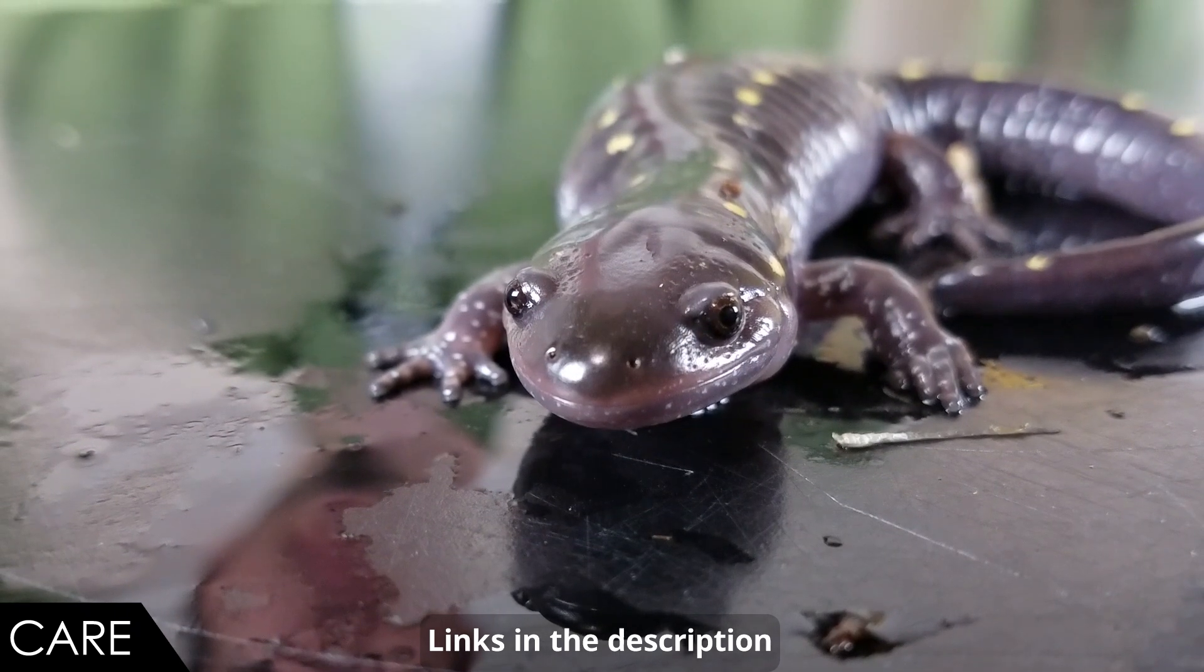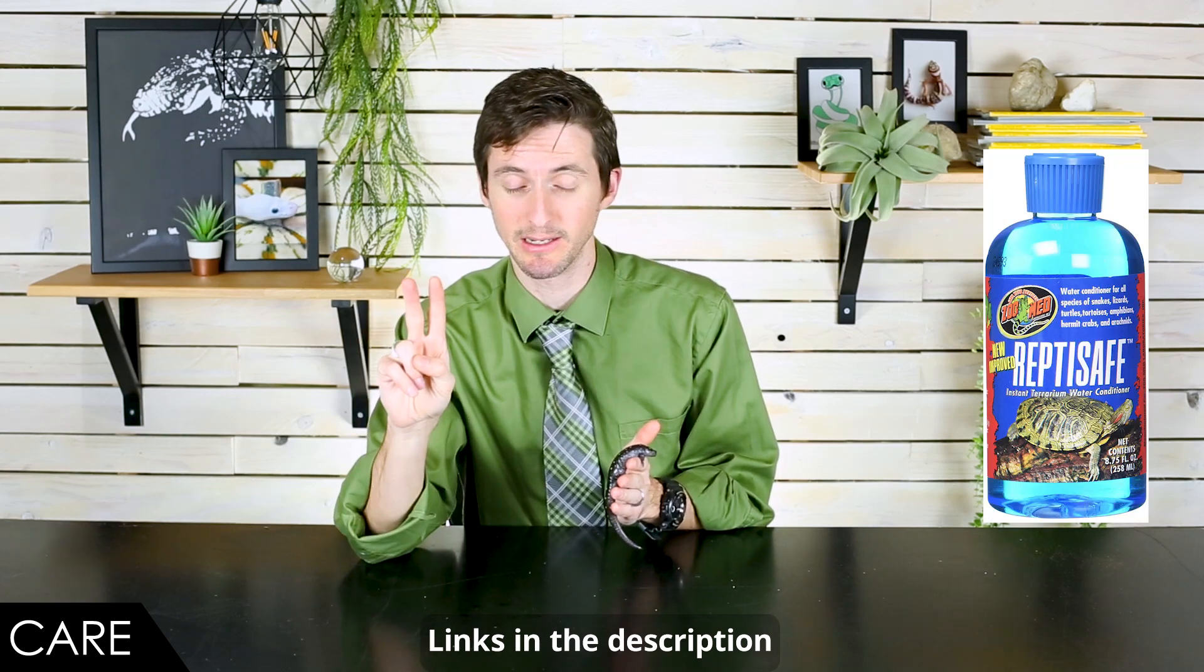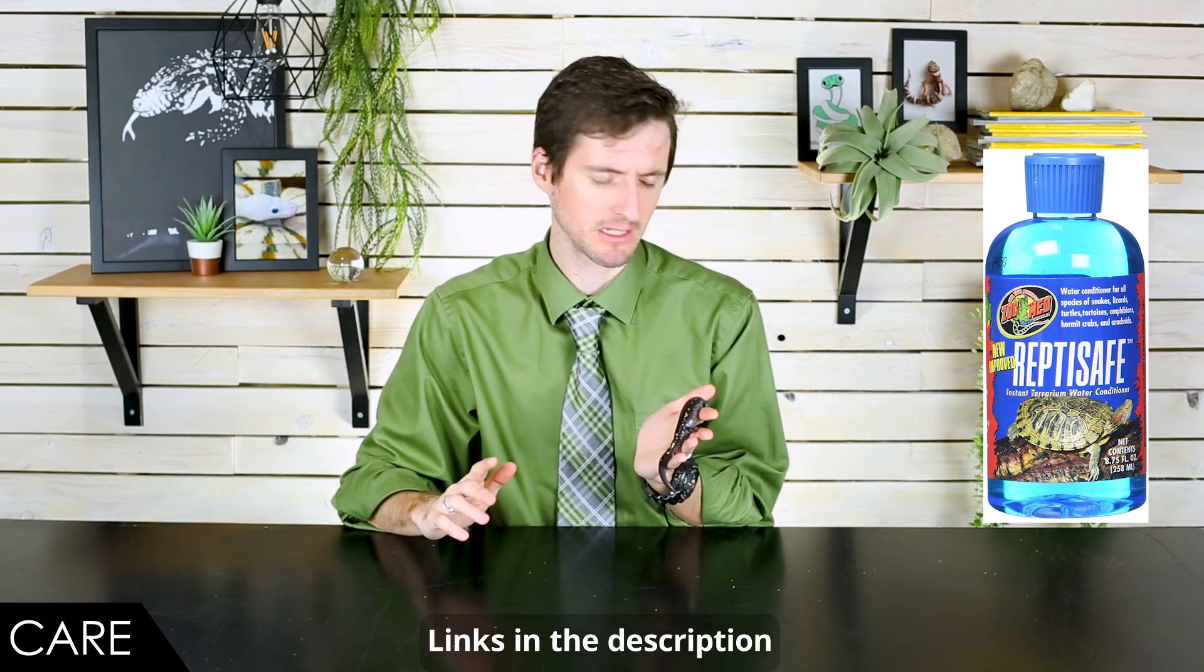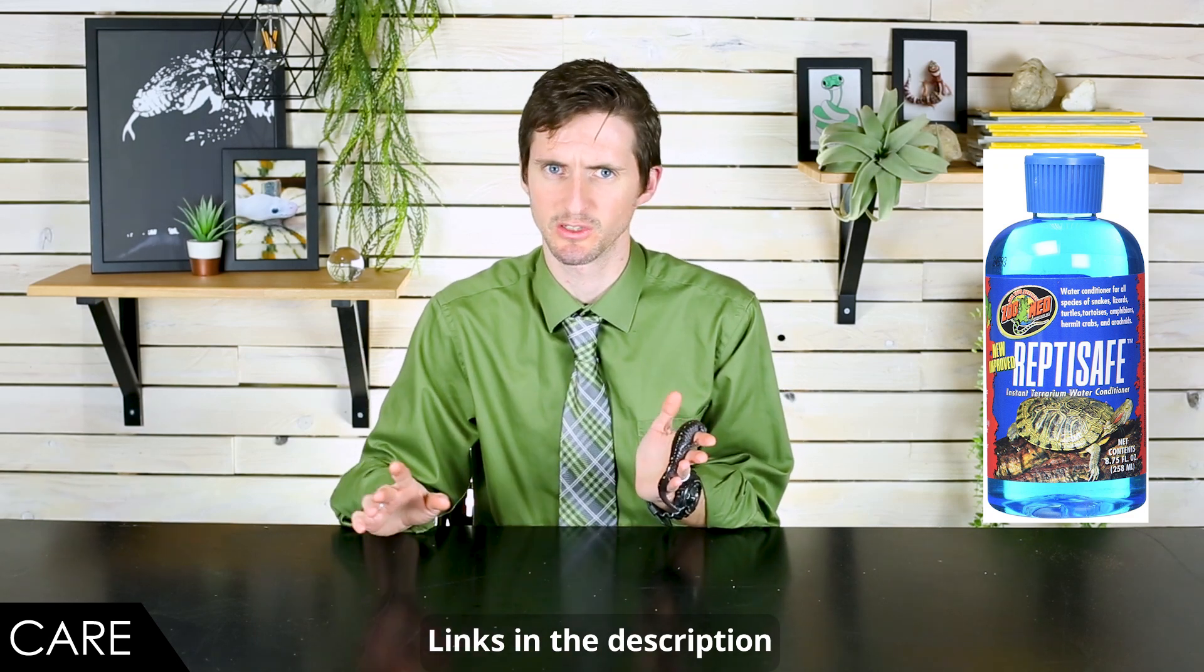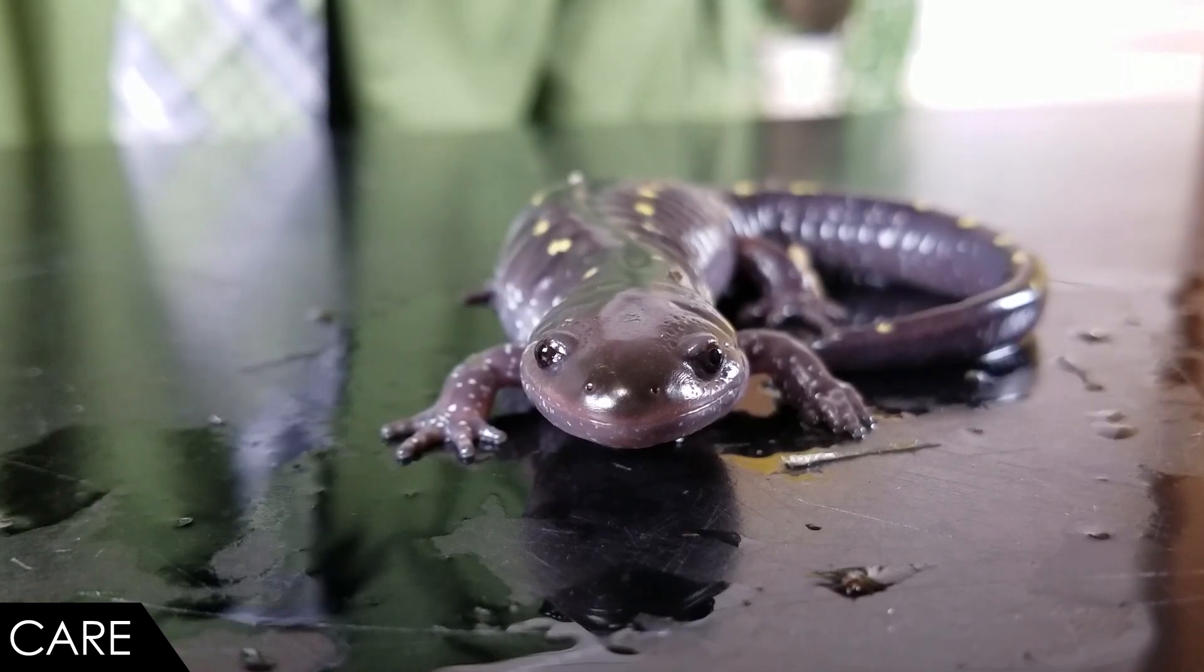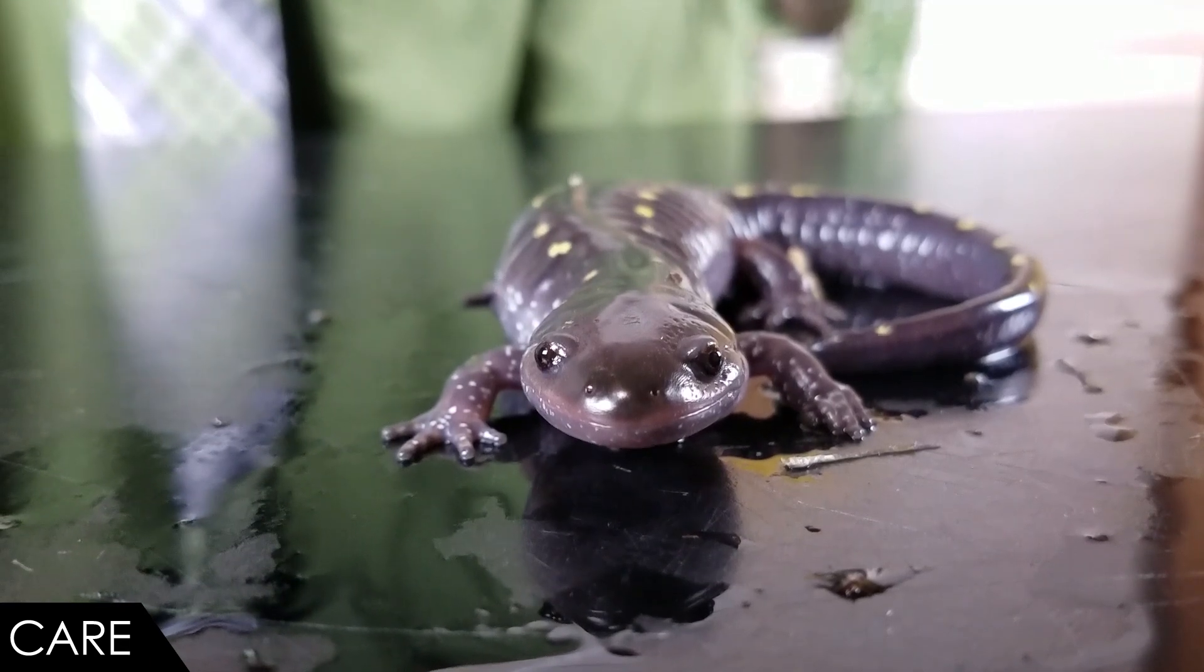They also should have access to a water bowl that they can get in. All of the water that you use for a spotted salamander or any amphibian needs to be dechlorinated and treated. You can buy drops that you add to the water at basically any sort of aquarium store that sells things for fish. You can also buy treated water, purified water at the grocery store. Just make sure you don't get distilled water because that can actually kill them. This is very important: purified water, not distilled water.